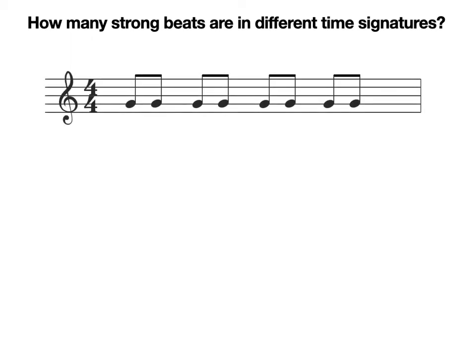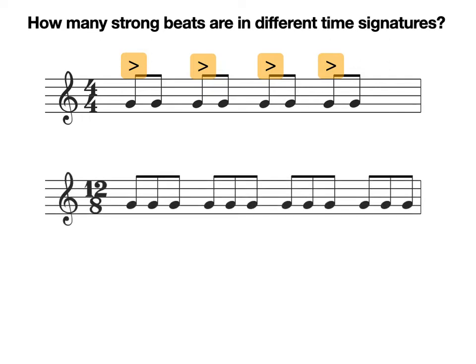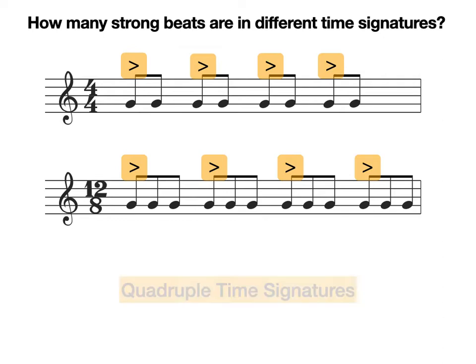What about this time signature? How many strong beats do we have? That's correct, we have four strong beats in this bar. Let's look at another time signature. How many strong beats are in this time signature? That's correct, this also has four strong beats. Both of these time signatures are examples of quadruple time signatures, meaning there are four strong beats in each bar.